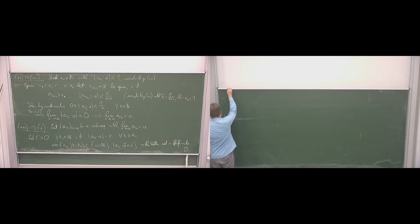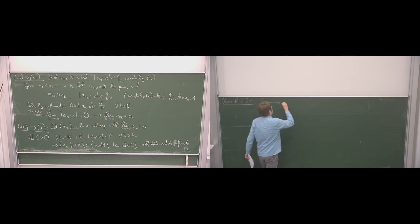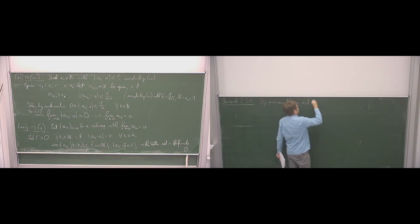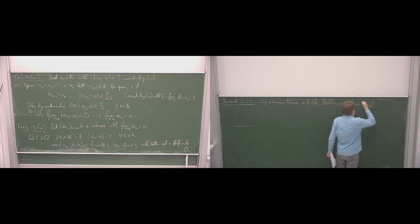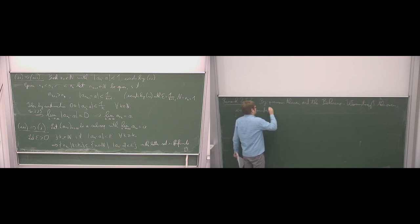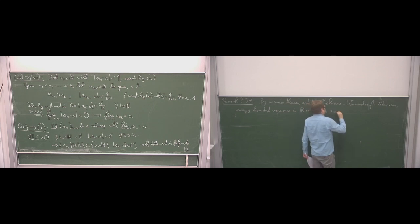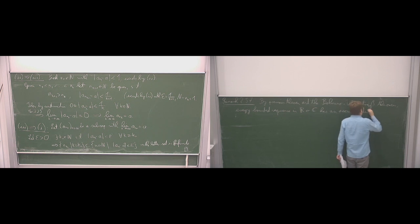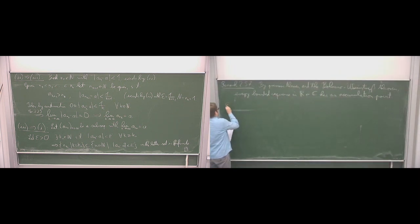By this previous theorem and the Bolzano-Weierstrass theorem, every bounded sequence has a convergent subsequence, so every bounded sequence in ℝ or ℂ has an accumulation point. Accumulation points are the same as limits of subsequences, which makes the notion convenient to work with directly.